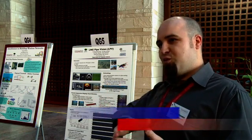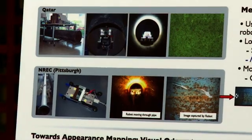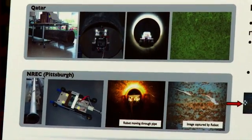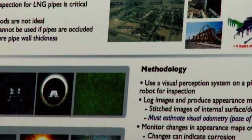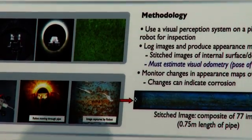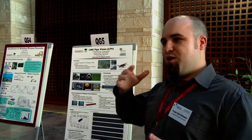We are looking to use a vision system on a robot to inspect gas pipes. The idea is that from these images, we can see the interior surface of the pipe, and we can also find three-dimensional information of the pipe wall thickness, for example. We're looking to monitor how that changes over time, and use that to identify points of corrosion in the pipe.